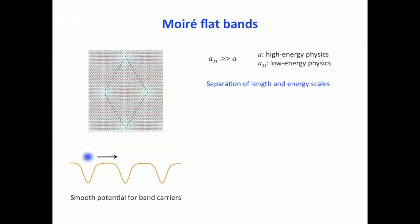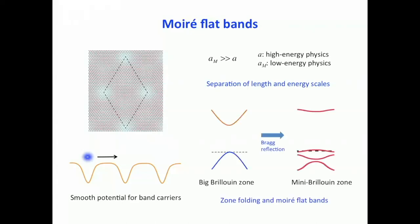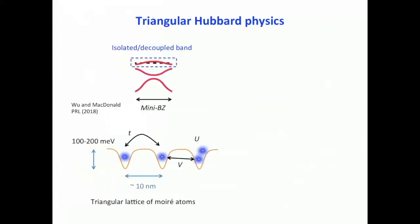Unlike graphene, you can think of the electronic structure in this material by forgetting about the original atoms, because as long as you are dealing with low-energy physics there is a nice separation of length scales. You can treat the electrons with a certain band mass of the TMD moving in a smooth periodic moiré potential. The effect is just zone-folding from the big Brillouin zone to the mini Brillouin zone, with Bragg reflection near the zone edge of the mini Brillouin zone, opening a mini-gap and producing a series of moiré flat bands. It has been shown in 2018 by Allan MacDonald's group that if you have a well-isolated moiré band, you can map the low-energy physics to a triangular lattice Hubbard model.